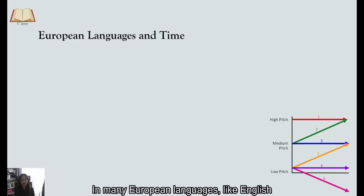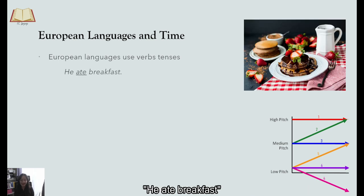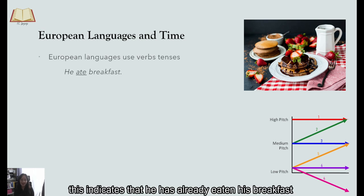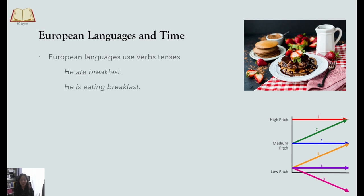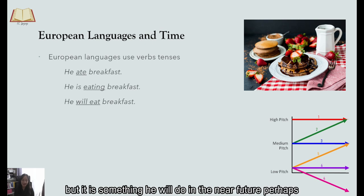So in many European languages, like English, verb tenses are used to indicate when an action takes place. For example, he ate breakfast. This indicates that he has already eaten his breakfast and it is a done deal. He is eating breakfast indicates that he is eating his breakfast right now as we speak. And he will eat his breakfast indicates that he hasn't eaten his breakfast yet and isn't eating it right now but it is something he will do in the near future, perhaps.